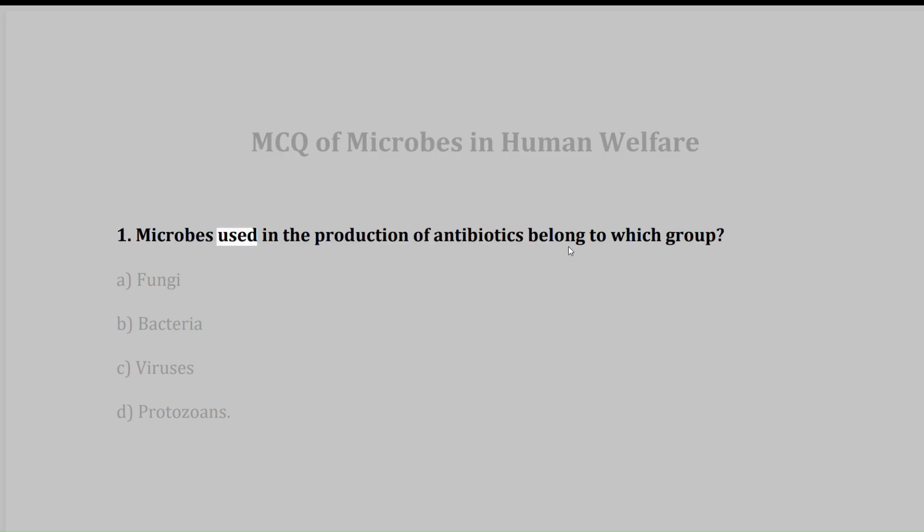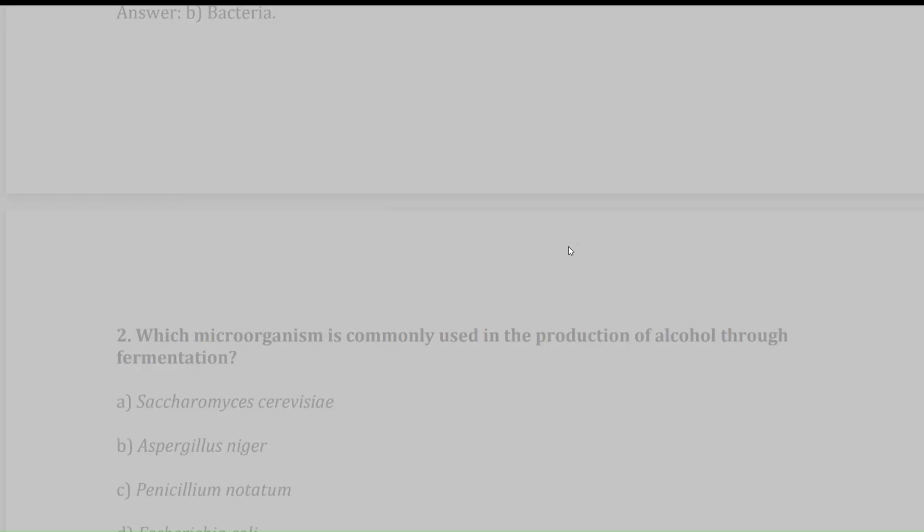1. Microbes used in the production of antibiotics belong to which group? A. Fungi, B. Bacteria, C. Viruses, D. Protozoans. Answer: B. Bacteria.